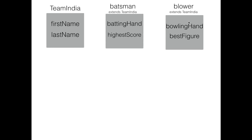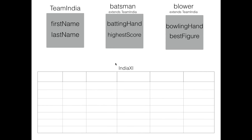In this case, my superclass is Team India and the subclasses are Batsman and Bowler. The properties from Team India — first name and last name — and the properties from Batsman — batting hand and high score — and the properties from Bowler — bowling hand and best figure — all need to come into a single table. Let's say I have a table called India XI. All these properties need to be represented as columns in this table.